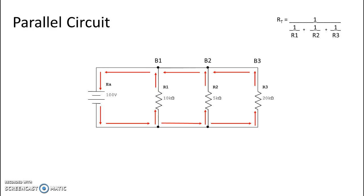And so what we'll do is we'll take one over 10k, which is the total ohmic value of branch one, one over 5k, which is the ohmic value for branch two, and one over 20k, which is the ohmic value for branch three. We'll total that and then we'll take one over it, and we get a total of 2.86k ohms.